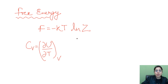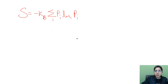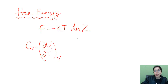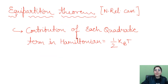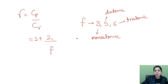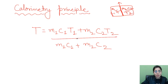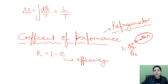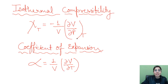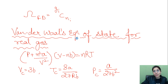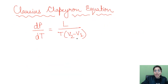Free energy F = minus k_B T log Z. Specific heat capacity C_v = (delta U / delta T) at constant V. Entropy in terms of probability: S = minus k_B summation over i of p_i log p_i, where p_i is the probability of state i. I hope all these important expressions and formulae will help you prepare well for the exam. All the best — believe in yourself, stay relaxed, and avoid negative marking.